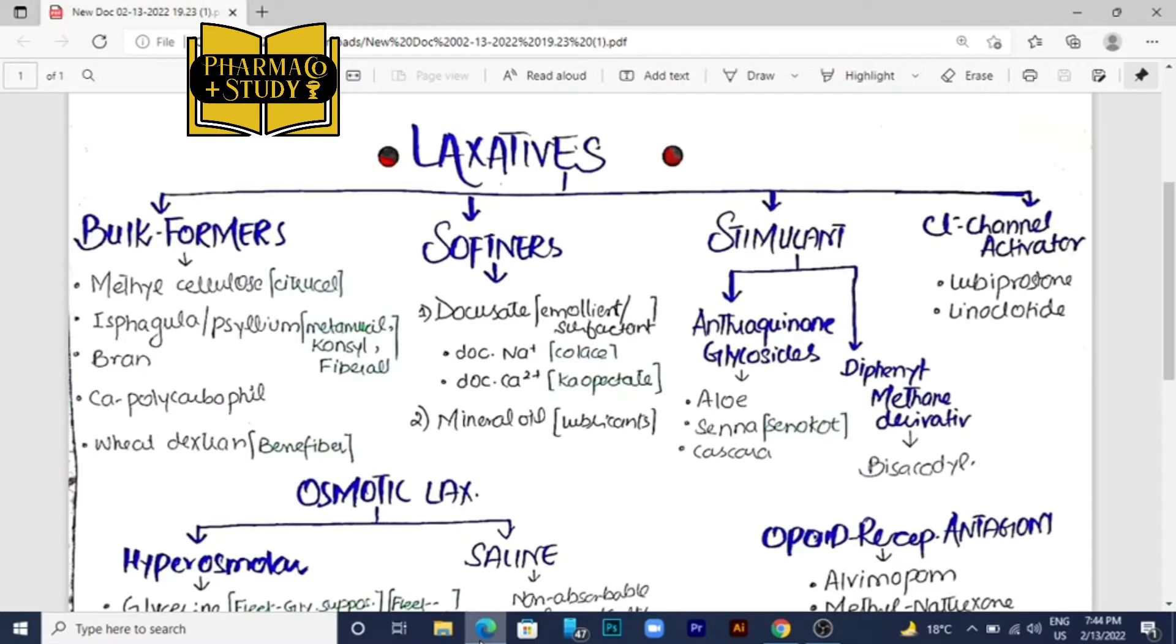So let's start the classification of the laxatives first. First we will see the bulk formers. Bulk formers are those laxatives that form the bulk in the stool and that will cause easy movement of the stool through the intestine.